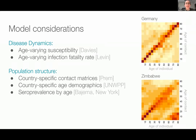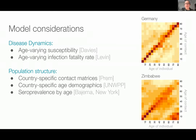We included age-varying susceptibility and infection fatality rate varying by age. These are really important to capture within your model to get the disease dynamics correct. We also included country-specific contact matrices and age demographics — an example of that is shown on the right-hand side. As you might expect, the structure of a population varies widely between countries, and we wanted to include this to know how it affects our big picture takeaways and whether results would really be country-dependent.